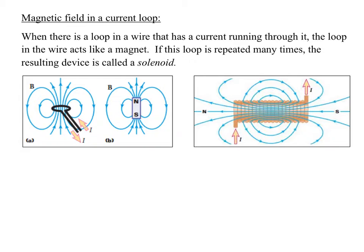So with a solenoid, if the current is going through this wire, as the current goes up, the magnetic field comes out of this end and goes back around into the other end. So this end is like the north pole of the magnet, and the other end is like the south pole. A solenoid is a looping of wires with current flowing through them, and as a result, those wires create a magnetic field similar to that of a magnet itself.